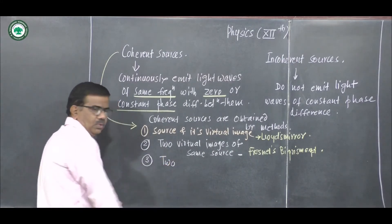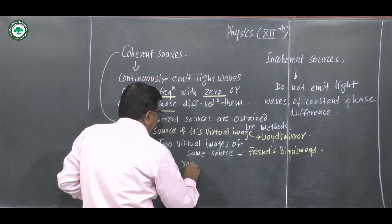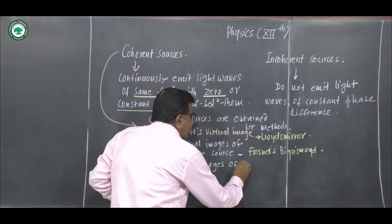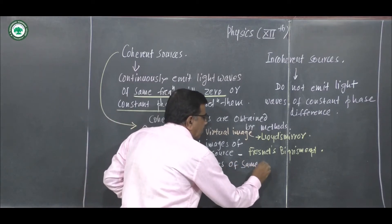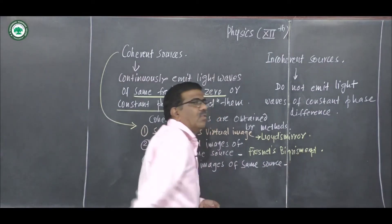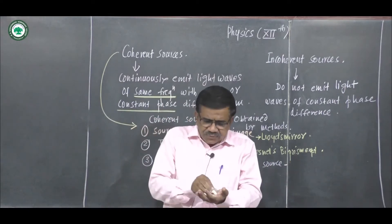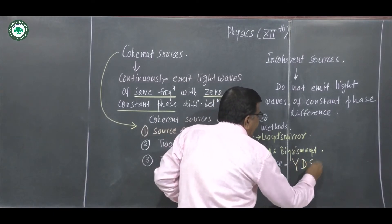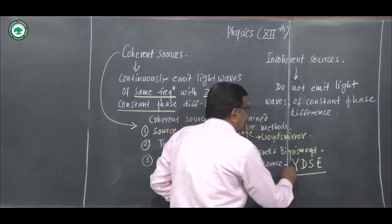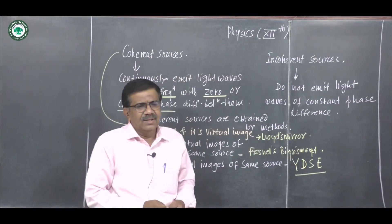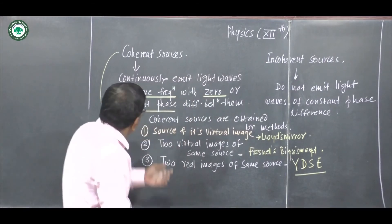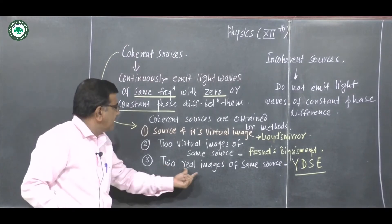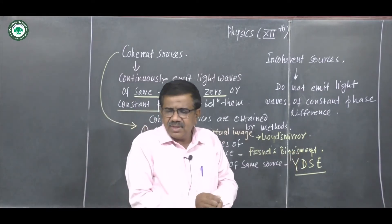We obtain the two real images of the same source. We obtain these two real images of the same source in Young's double slit experiment. In Young's double slit experiment, we obtain the two coherent sources — that is, the two sources are real images of the same source.